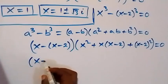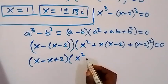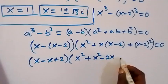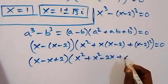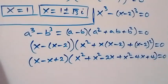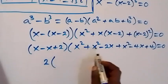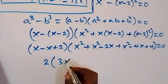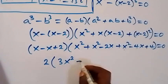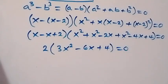We take (x minus (x minus 2)), which simplifies to 2, out of the bracket. Then expanding inside: x squared plus x squared minus 2x plus x squared minus 4x plus 4. The x terms cancel, and we collect the x squared and x terms together.